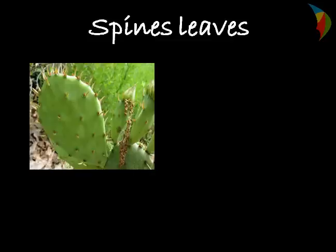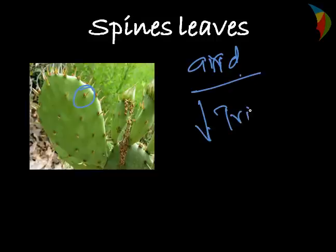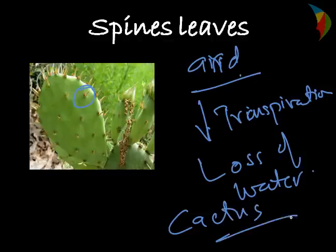The second type of modification is spine modification, where the leaf is modified in the form of spines. This is mostly found in arid regions where transpiration is high, and the plant has a defense mechanism — the leaf is modified into spines. This helps in reduction of transpiration and loss of water. A common example is cactus.